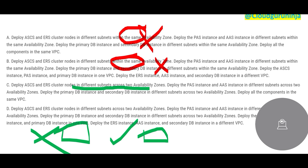Options C and D are similar in most lines. Both deploy PAS and AAS instances in two different AZs, and both deploy primary and secondary DB instances in different subnets across two AZs. The only difference is the last line: Option C deploys all components in the same VPC, while Option D deploys some components in one VPC and other components in a separate VPC — for example, ASCS in one VPC and ERS in another.